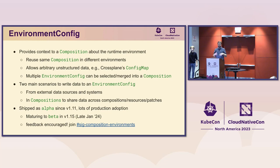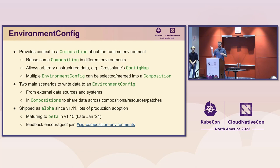It's kind of like Crossplane's version of a config map — it allows arbitrary unstructured data and key-value pairs. It's a way to stash information from wherever you need so that Crossplane compositions can access, manipulate, and use it.